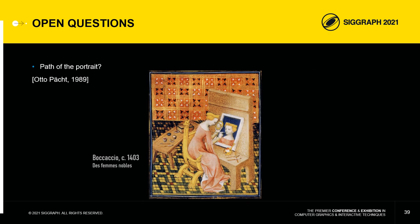This miniature from 1403, brought back by Otto Pächt, shows a noblewoman making herself a portrait by looking into a mirror. Did Van Eyck have the idea to draw directly on the mirror?